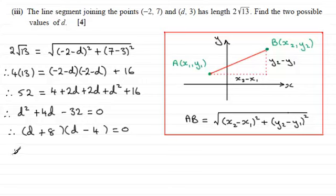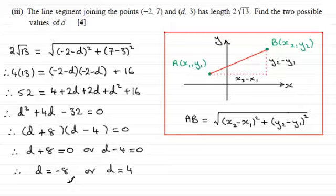That means that each of these factors must be equal to 0. So you've got d + 8 = 0, or d - 4 = 0. And this will lead to d = -8 or d = 4.